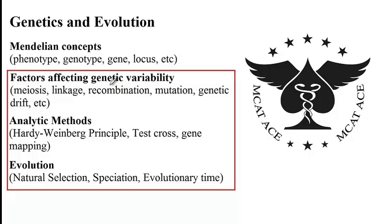In the first lecture, we discussed the Mendelian concepts. We went over the principle of gene mapping based on the frequency of crossovers or recombinations between two genes, and we also discussed mutations — different types of mutations — gene mutations versus chromosome mutations that can affect genetic variability.